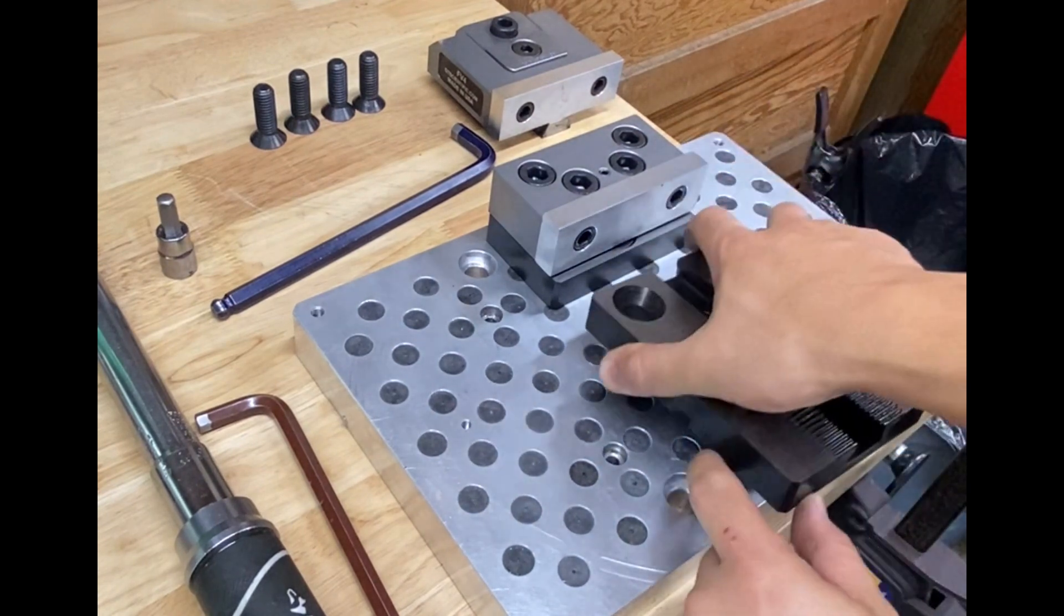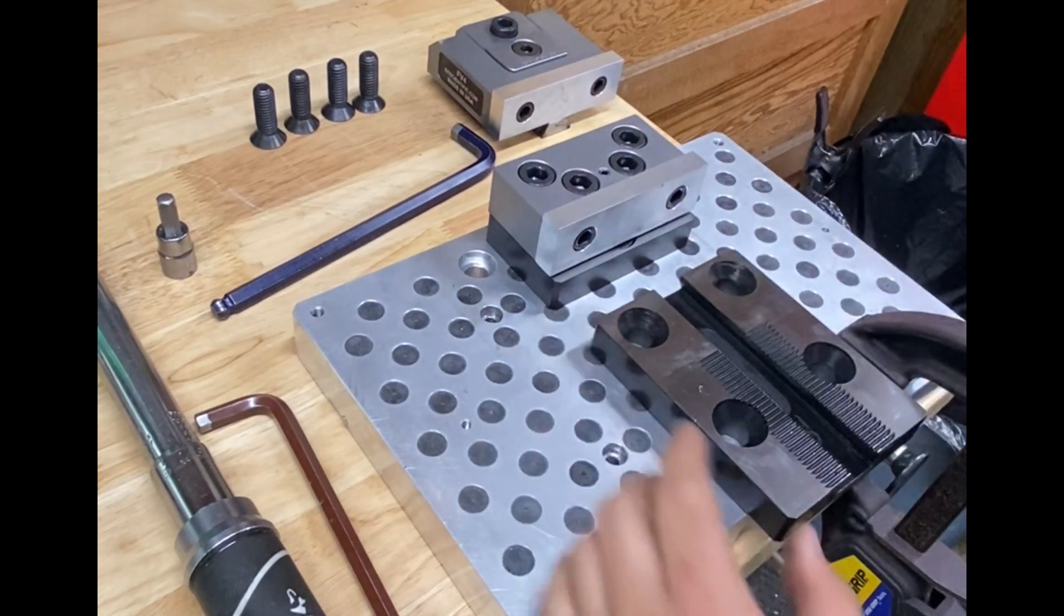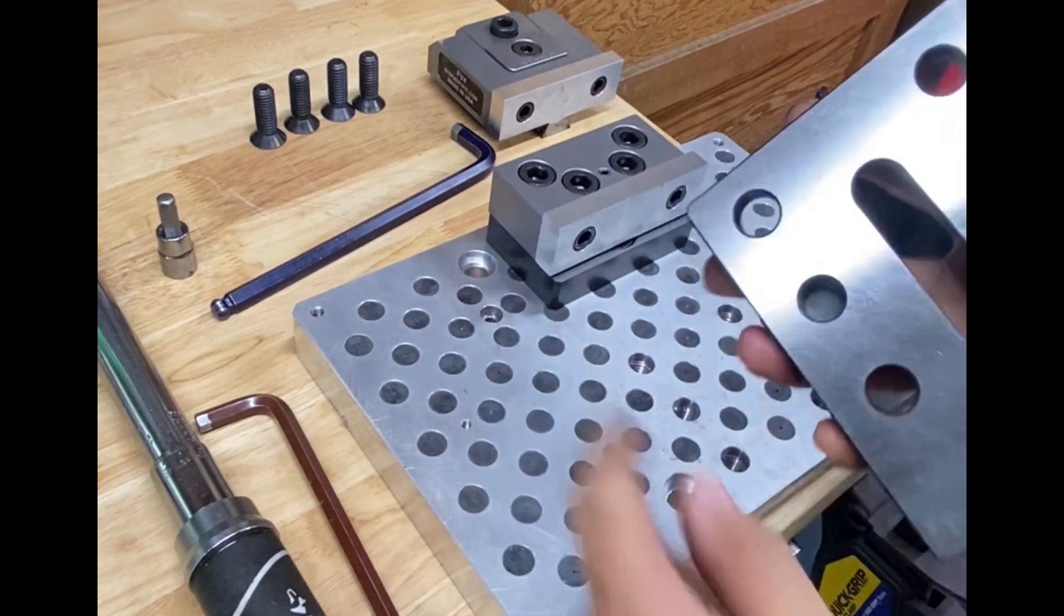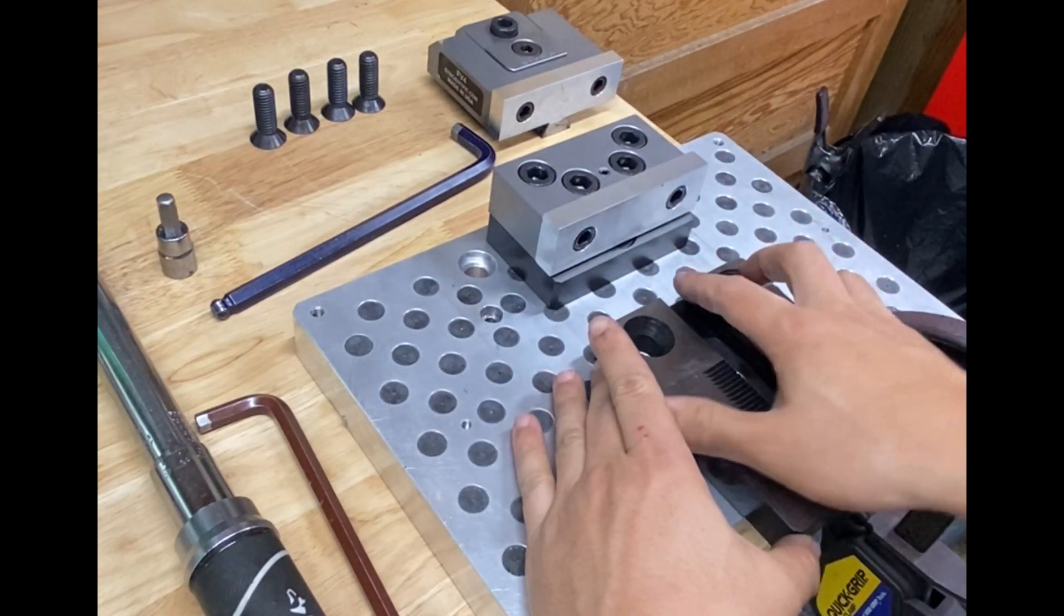You could put dowel pins over there to make it a more rigid assembly. I haven't found that it's needed, so that's just what those are for. It's optional.